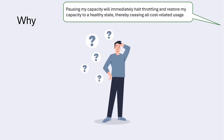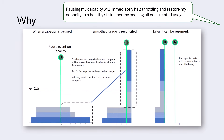Another common misconception: pausing your capacity instantly stops all costs. That's not entirely true — some charges may continue, and reservation discounts only apply to uptime. FCA helps you see the real story. When you pause, usage is reconciled and pay-as-you-go rates may kick in. With FCA, you can track and understand every detail.